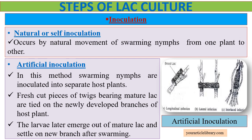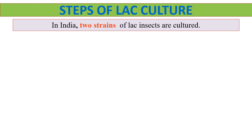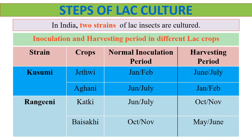In India, two strains of lac insects are cultured. One is kusumi, which is reared on the kusum plant. The other one is rangini, which is reared on host plants other than kusum. For each strain, two crops are cultured at different times, with different inoculation periods and harvesting periods, as shown in the table.